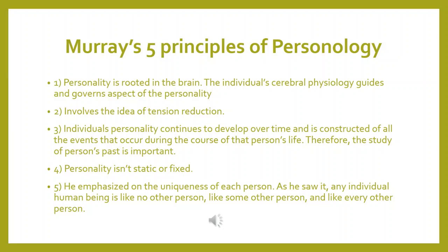The third principle is that individual personality continues to develop over time and is constructed from all the events that occur during the course of a person's life. Therefore, the study of a person's past is important. Henry Murray focuses on the past as well as whatever is continuously happening to the person over time — this is a key difference from Freud's theory, which emphasizes only the past.